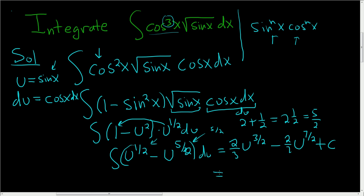The last thing to do is just plug your u back in. So here's u. U is sine x. So we end up with 2 thirds sine to the 3 halves power of x minus 2 over 7 sine to the 7 halves power of x plus c. And that is the final answer.